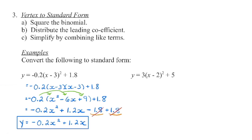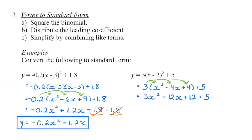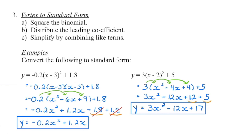We do something very similar for the second example. Using the shortcut for a binomial squared: square the first term to get x squared, double the product of the two terms to get negative 4x, and square the last term — negative 2 times negative 2 gives positive 4. Then distribute the coefficient of 3 into every term, and combine like terms: 12 plus 5 gives 17. So now we have that same parabola in standard form. Standard form also gives us the y-intercept: 0 for the first and 17 for the second.